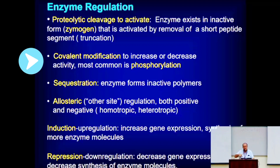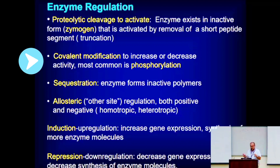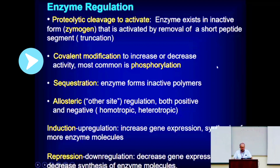The outcome of phosphorylation can typically be either to activate an enzyme or, depending on the identity of the enzyme, to inhibit it. So covalent modification is an extremely important regulatory mechanism, and phosphorylation is the most common form, though other forms of covalent modification exist.